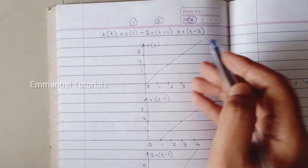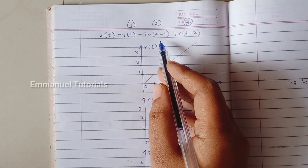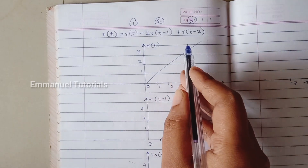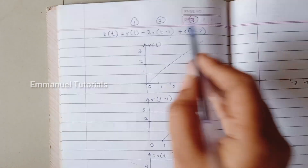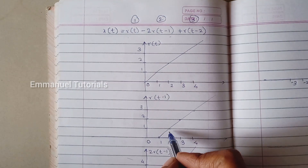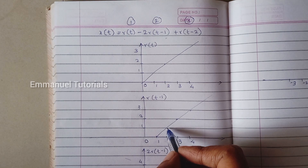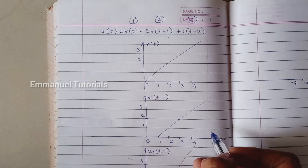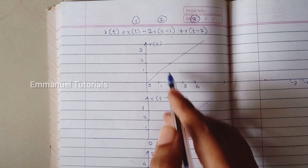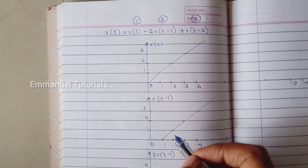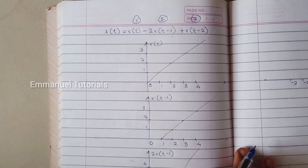For the second part, that is 2R(T minus 1). R(T minus 1) is a delayed version — that is, shifted to the right by 1 — of the unit ramp signal. That is what I have drawn here. So at T=2 the amplitude is going to be 1, at T=3 the amplitude is going to be 2 and so on. And then when you amplitude-scale it by 2, these values are going to be multiplied by 2 at each of the instances.